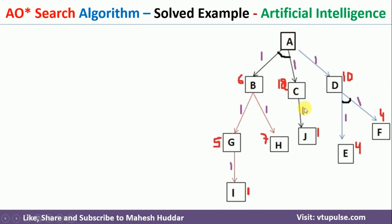This graph has multiple nodes, and we need to traverse it to solve the complex problem. At node A, we have multiple paths: one path leads to D, and another path leads to both B and C together. The path to B and C is an AND node — meaning to achieve A via that path, you must achieve both B and C. Between these two paths, we need to select the optimal one and continue from there.